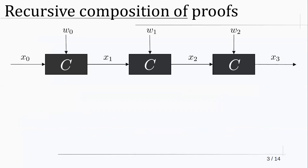Now, the motivation for this problem comes from recursive composition of proof systems. The setting is: you have an arbitrary computation C and you want to compose it with itself many times. You start from input x0, plug it into C to get x1, someone runs C again on x1 to get x2, and so on. Each step may include secret witness inputs, and you want to prove the correct evaluation of the whole chain better than producing independent proofs for each step.